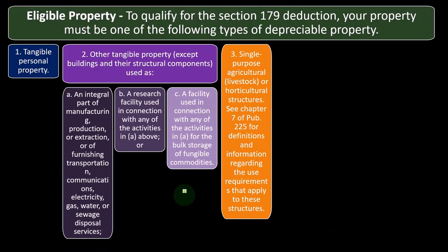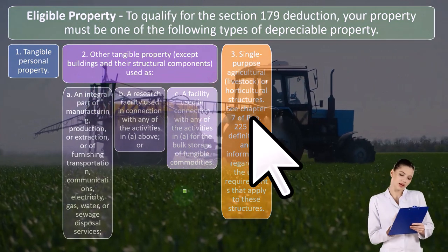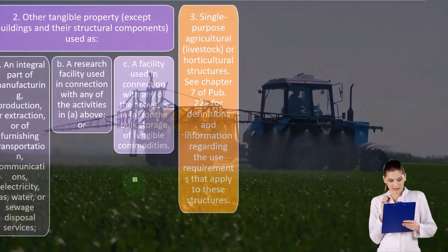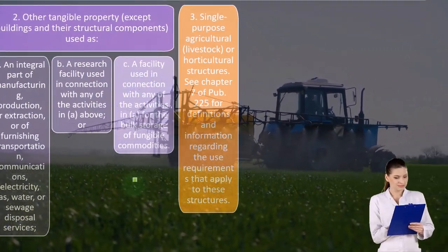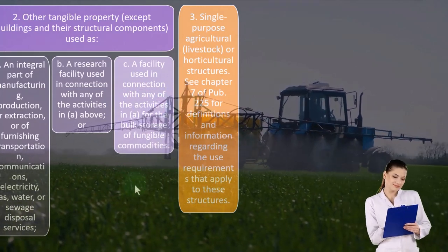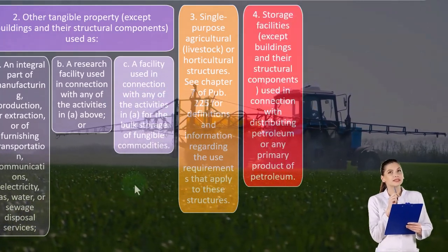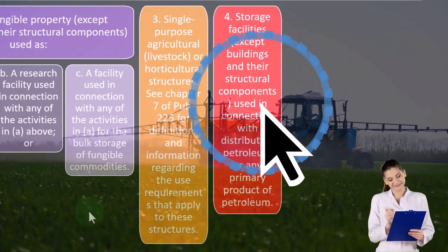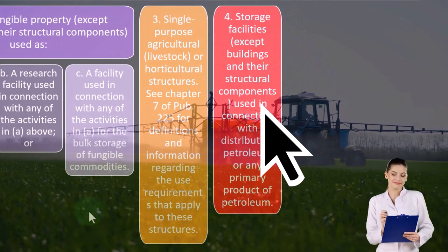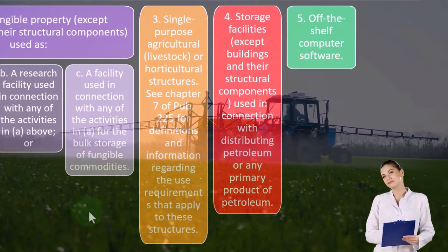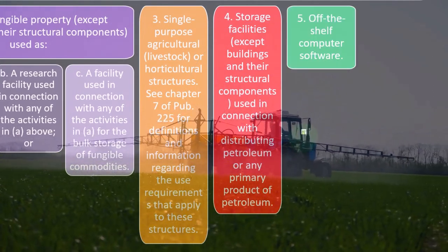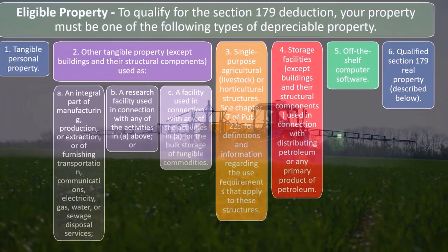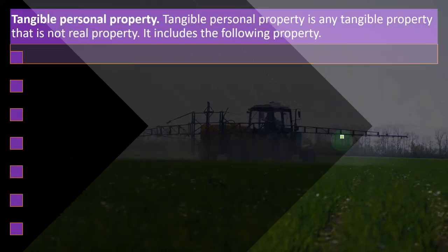Three: single-purpose agricultural, livestock, or horticultural structures. See chapter seven of Publication 225 for definitions and information regarding the use requirements that apply to these structures. Number four: storage facilities, except buildings and their structural components, used in connection with distributing petroleum or any primary product of petroleum. Five: off-the-shelf computer software. Six: qualified Section 179 real property, described below.